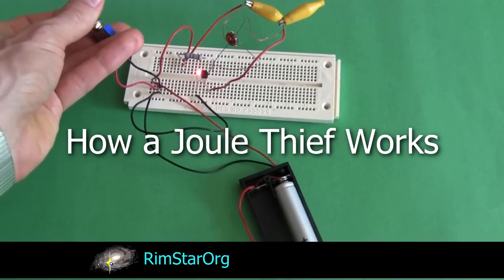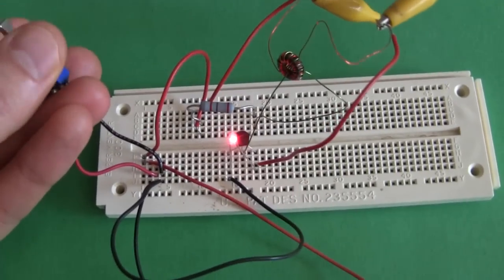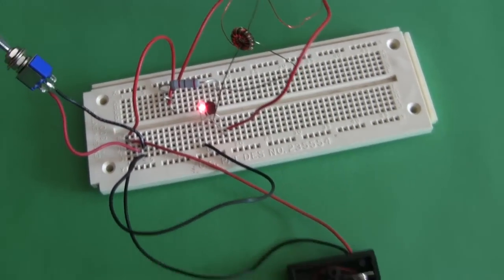Hi gang, I'm going to explain how a basic Joule Thief circuit works. Briefly for those of you who don't know what that is, it's a circuit that allows a battery to light an LED, even if the battery doesn't have enough voltage to light that LED.